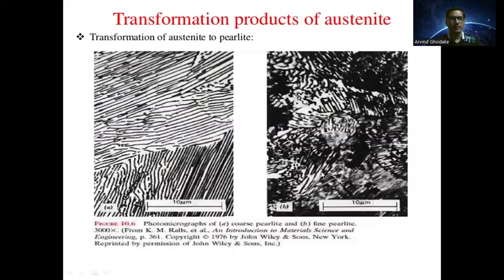This is a diagrammatic representation of the transformation of austenite into pearlite at a 10 micrometer scale. Diagram A is a fine pearlite and diagram B is the coarse pearlite.